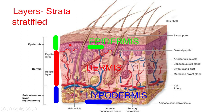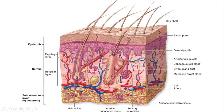Waste products and carbon dioxide are removed through these blood vessels — the arteries, the capillary plexus, and the veins. This is the source of oxygen for the skin. So this is the skin: the epidermis, the dermis, and the hypodermis.